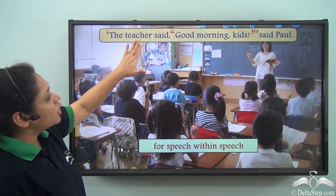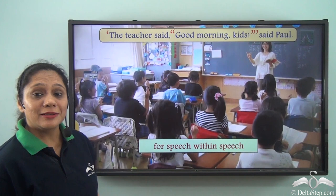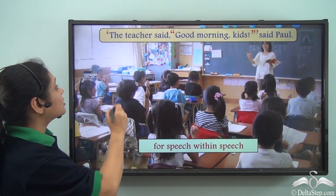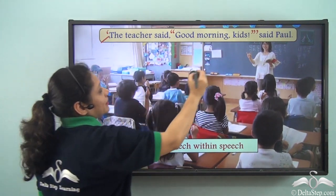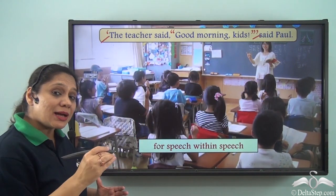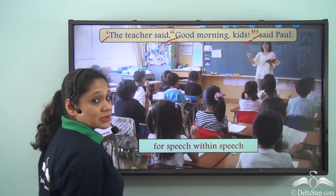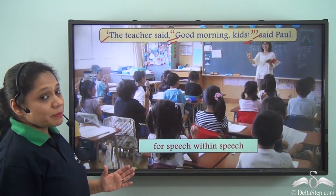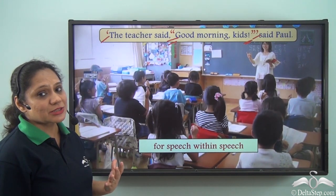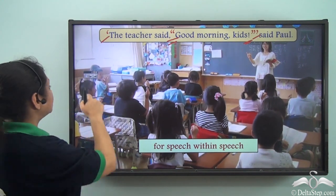Consider: The teacher said 'good morning kids,' said Paul. Here there is a quote within a quote. The first quote has been put within single inverted commas, and the quote within the quote has been put in double inverted commas. So remember that we use both single and double quotation marks when we have to represent speech within speech.